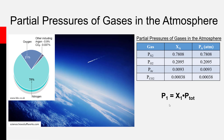We're going to use Dalton's Law of Partial Pressures to calculate the pressures of individual gases in a mixture — both by summing partial pressures to give the total pressure, and by calculating the mole fraction and then multiplying it by the total pressure to find the partial pressure of each individual gas.